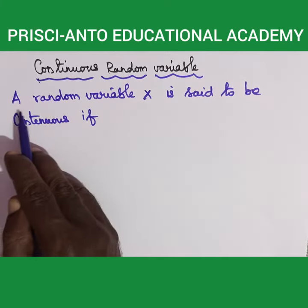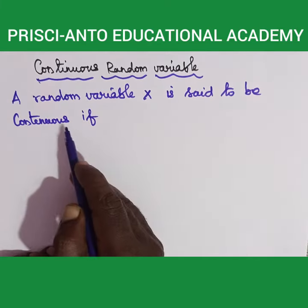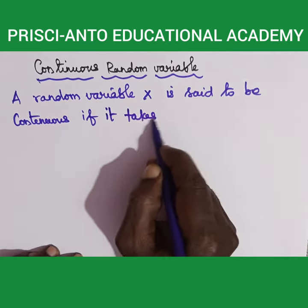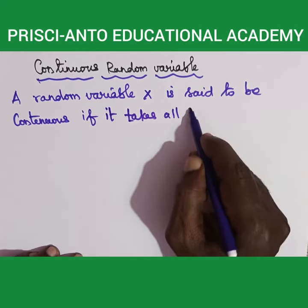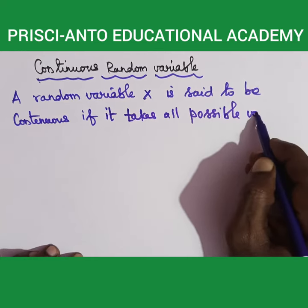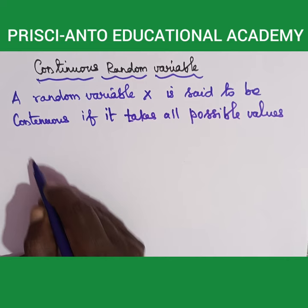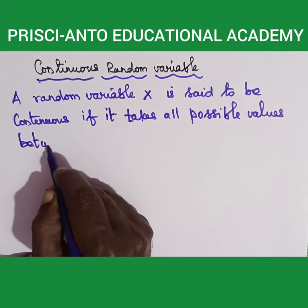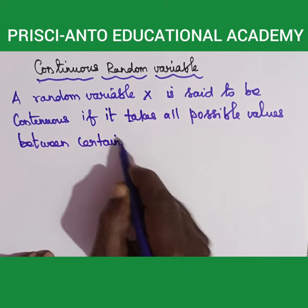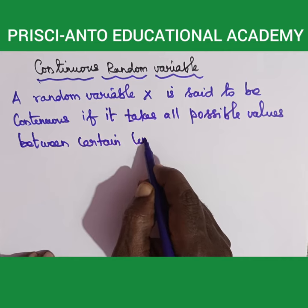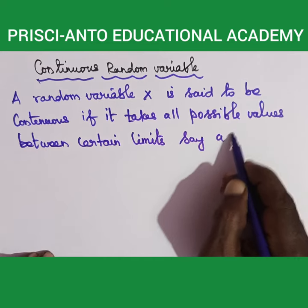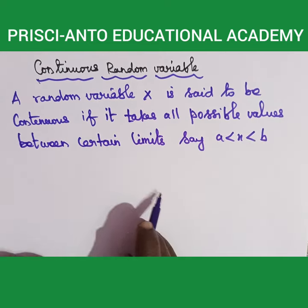Continuous random variable: a random variable x is said to be continuous if it takes all possible values between certain limits, say a less than x less than b.